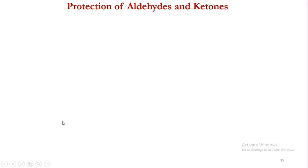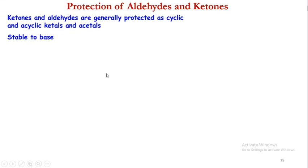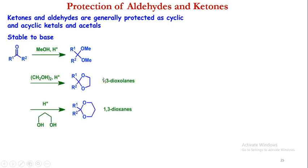Now let us discuss the protection of ketones and aldehydes. Ketones and aldehydes contain a carbonyl group, which is electron deficient, and the protection can be done using either cyclic or acyclic acetals. The ketals and acetals are stable to base. The formation of a ketal uses an alcohol in the presence of an acidic medium — when a ketone is reacted with an alcohol in acidic medium, it is converted into the ketal.